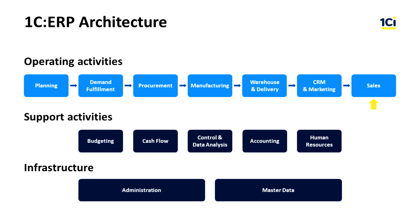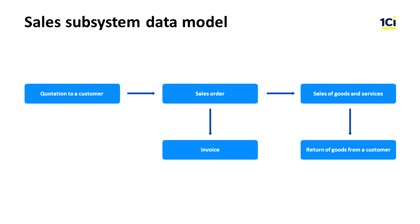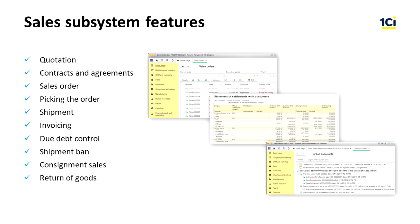The sales subsystem is closely connected with the CRM subsystem and manages the sales of goods and services process. The sales process starts with a quotation to the customer, followed by opening a sales order and invoicing. In 1C ERP, the client can create an order themselves if they are granted access to the system. After order placement, we execute sales of goods or services and can then perform the return of goods from a customer. Sales management capabilities include: sending quotations to customers, concluding contracts and agreements, receiving sales orders, picking and shipping to a customer, managing the invoicing process, and controlling due debt. There is a shipment ban in case of a certain amount of debt or delayed payment.